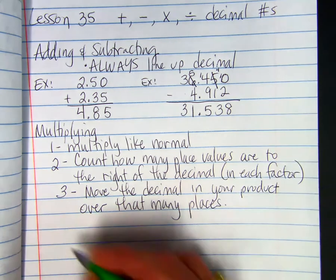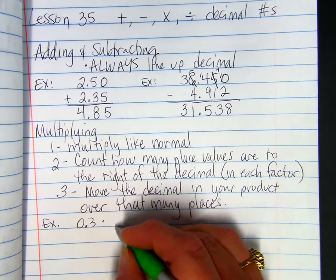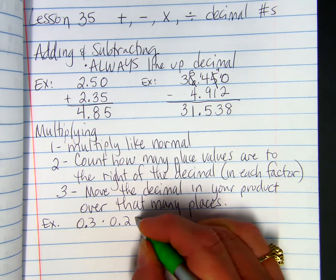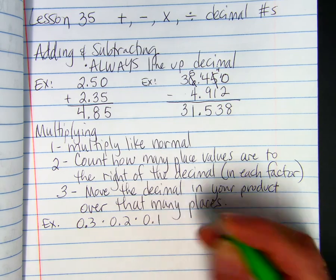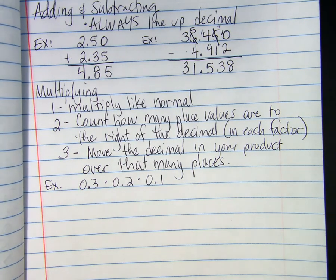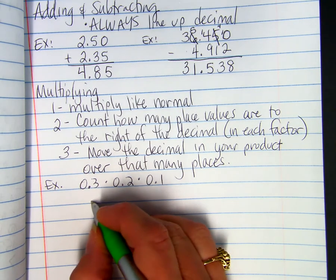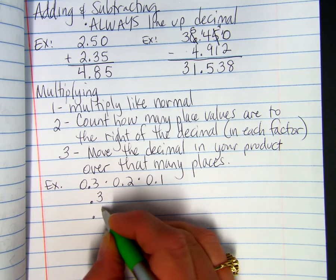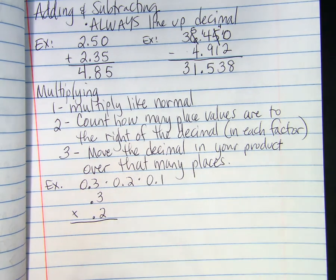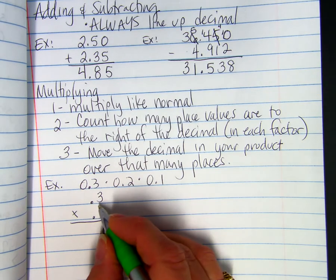So, I'm going to show you an example. Let's say we wanted to do 0.3 times 0.2 times 0.1. We multiply just like normal. 3 times 2 times 1. Now, I'm going to set it up with the decimals here. 3 times 2 is 6.